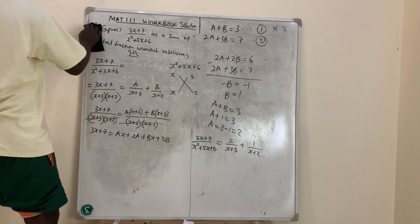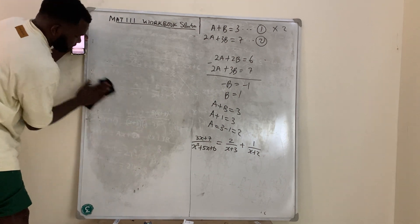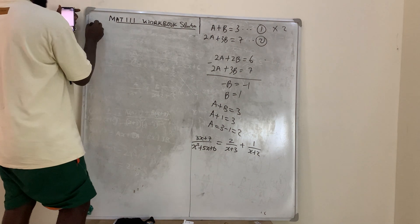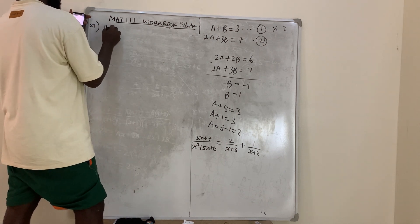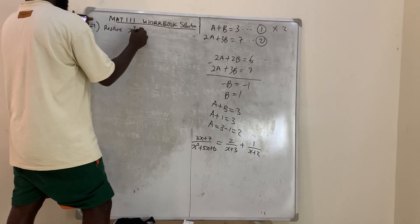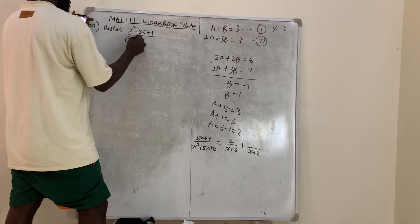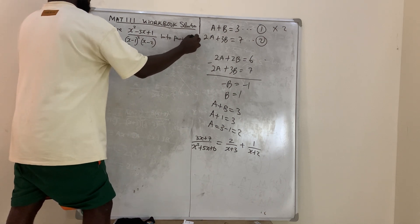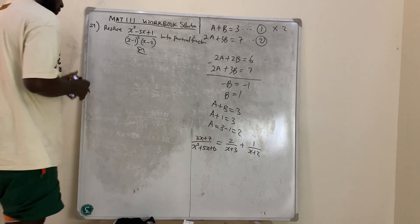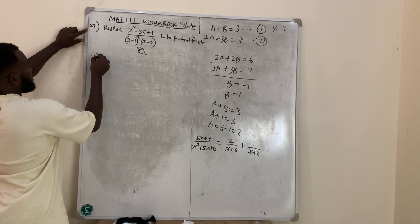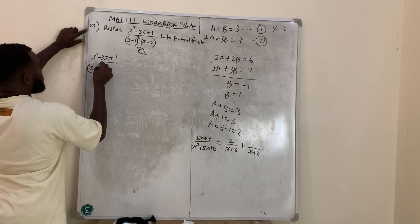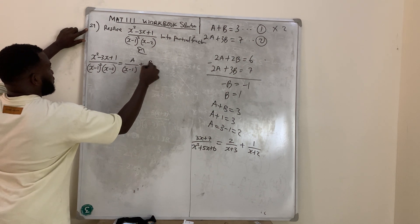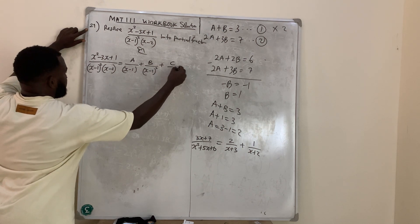Now question number 29. Question 29 says: resolve (x² − 3x + 1) all over [(x − 1)² × (x − 2)] into partial fractions. The same method is applied. So: (x² − 3x + 1) over [(x−1)²(x−2)] equals A over (x−1) plus B over (x−1)² plus C over (x−2).